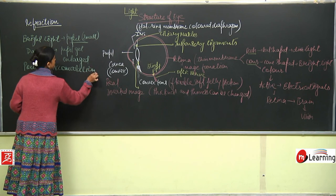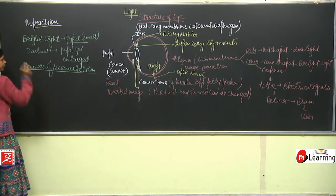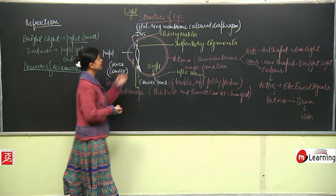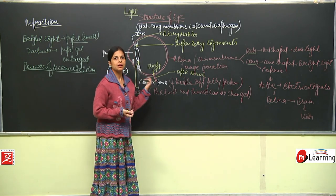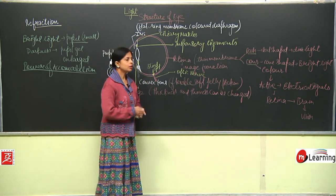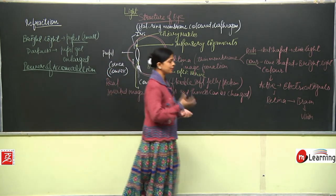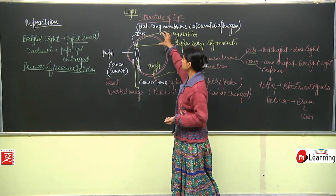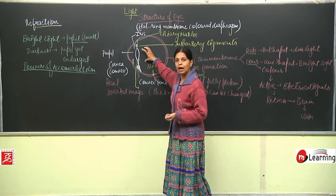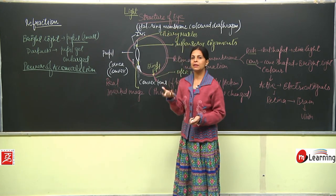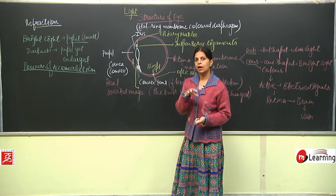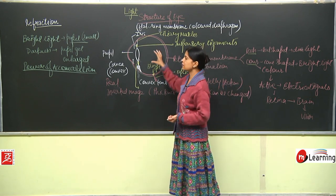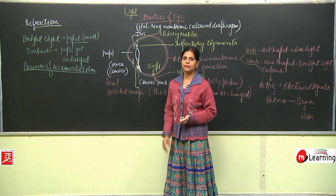What is the power of accommodation, and what is the role of the ciliary muscles and the suspensory ligaments? We will talk about how the lens becomes thick and how the lens becomes thin, and what is the role of all this.